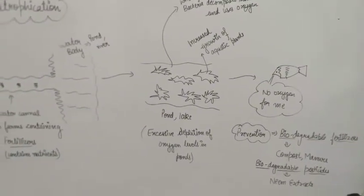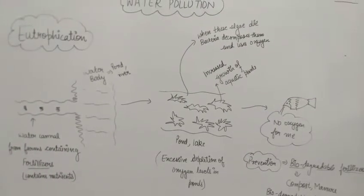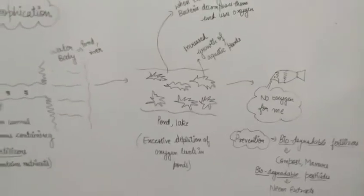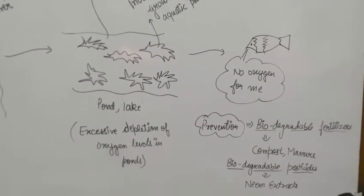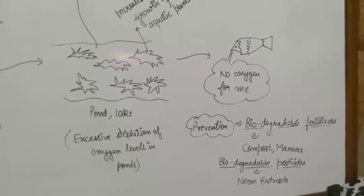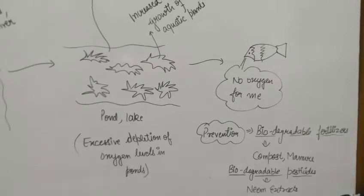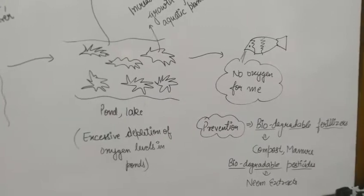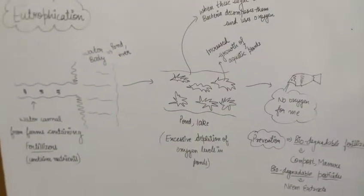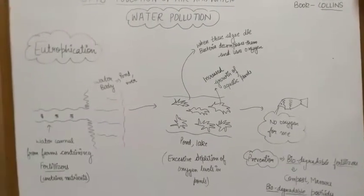To prevent eutrophication, the reason it happens is that pesticides and fertilizers are non-biodegradable and accumulate in water bodies, creating problems. So we should start using biodegradable fertilizers and pesticides, which will not remain in the environment and will not pollute water bodies. Examples of biodegradable fertilizers are compost and manure, and an example of a biodegradable pesticide is neem extract.